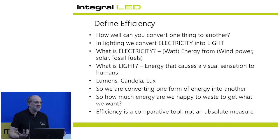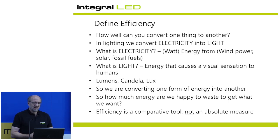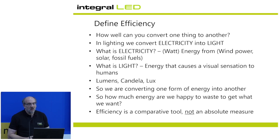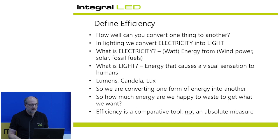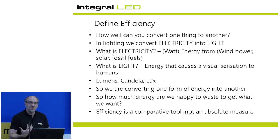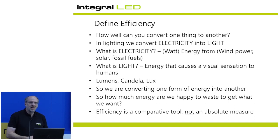To understand efficiency we need to define it and understand the terms we're using. We have lumens per watt — efficiency is converting one thing to another, in this case converting electricity to light. Watts of electricity can come from wind power, renewable sources, or fossil fuels, which is very pertinent today given questions about climate change. But what is light? Light is defined as an energy that causes a visual sensation in humans. It comes in quantifiable terms of lumens, candela, and lux.